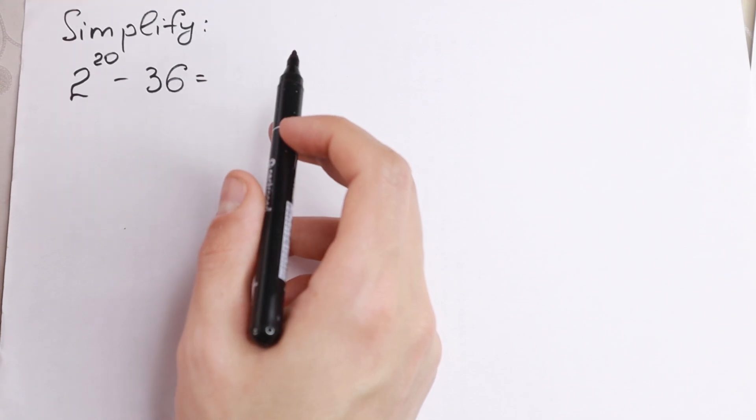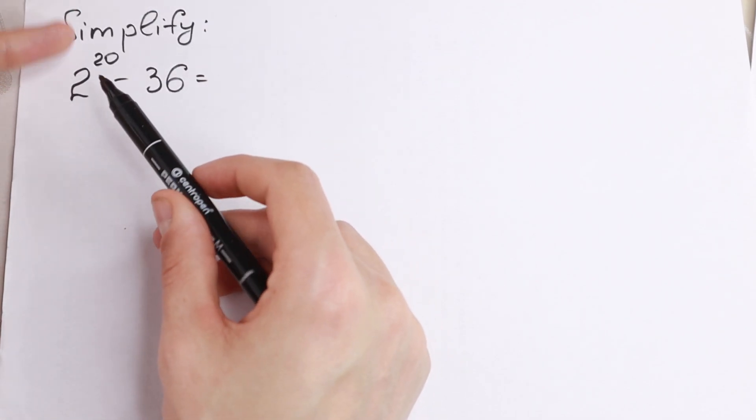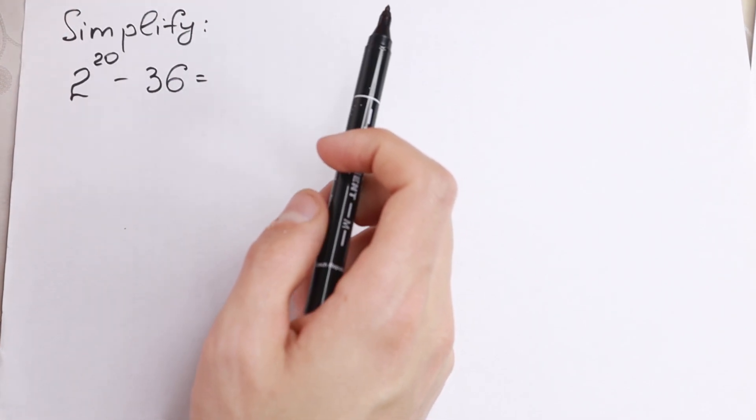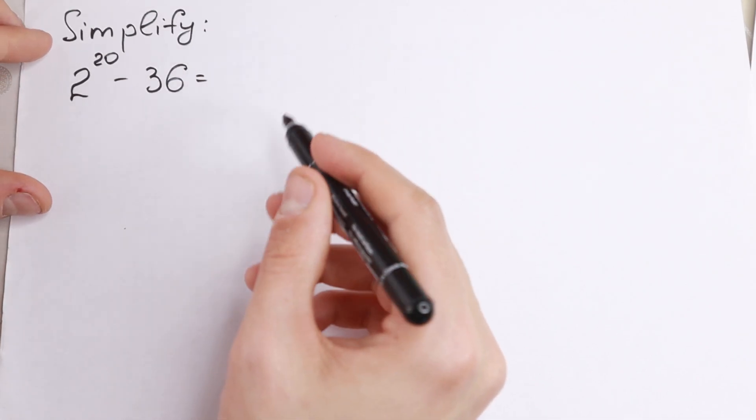On the first sight, the worst way to solve it is to raise this 2 to the 20th power, which is so long. But I want to show you a really good trick how to solve it. Take a look.